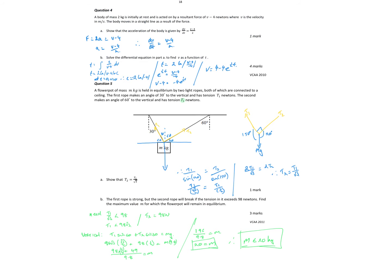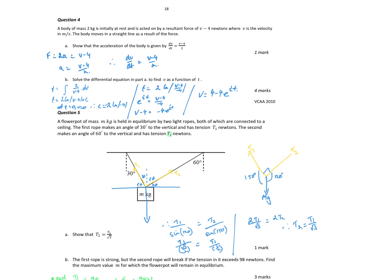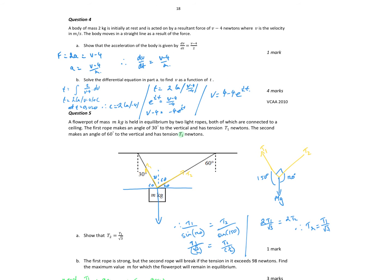The body of mass 2 kilograms is initially at rest and is acted on by a resultant force of v minus 4 newtons, where v is the velocity in meters per second. The body moves in a straight line. Show the acceleration. Sum of the forces equals ma. M is 2, so 2a equals v minus 4, so the acceleration equals v minus 4 over 2. Other forms of acceleration: dv/dt, v dv/dx, all those sorts of things. But since we're looking for dv/dt which is acceleration, therefore dv/dt is v minus 4 over 2.